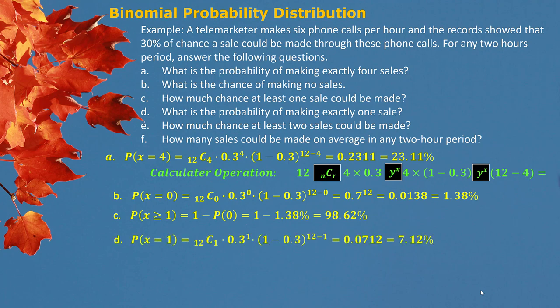Part D: What is the probability of making exactly one sale? This is straightforward — x = 1. Putting the numbers in gives the answer: 7.12%.